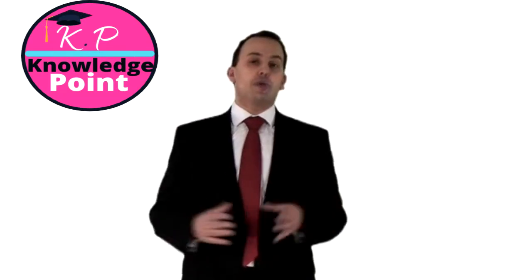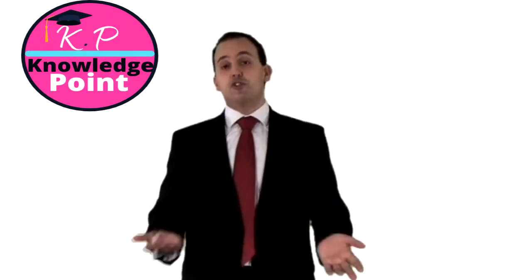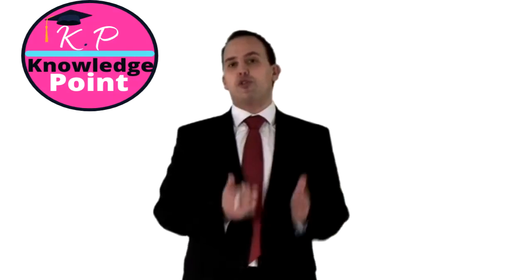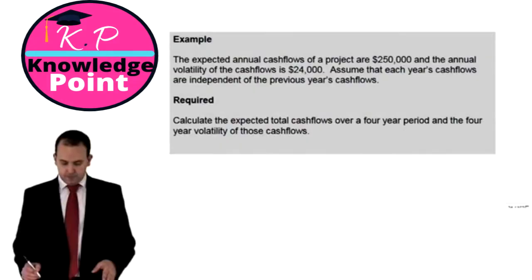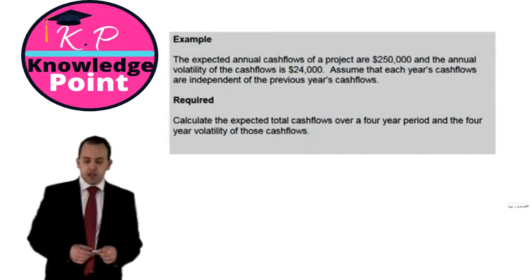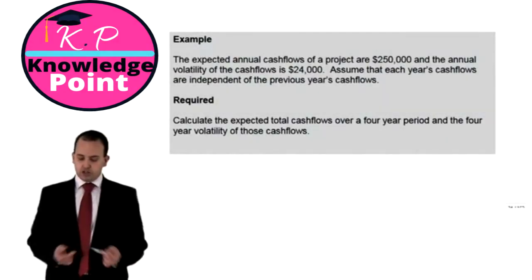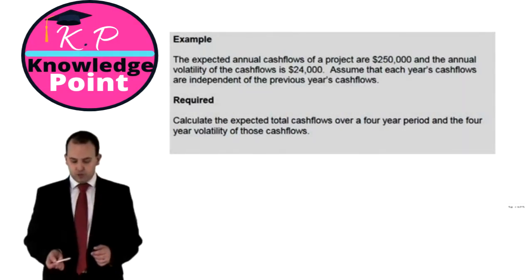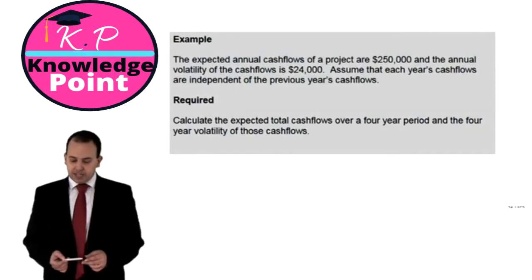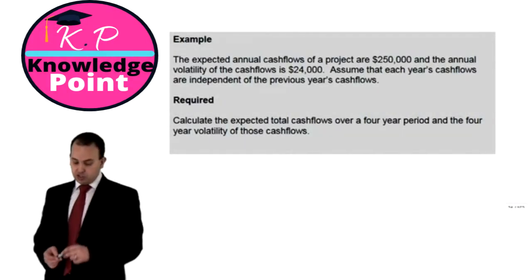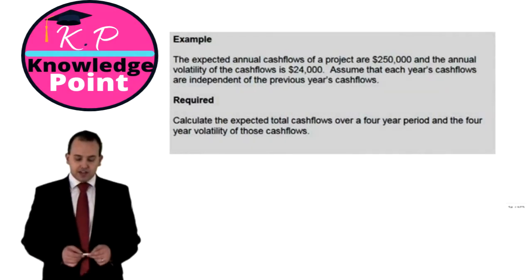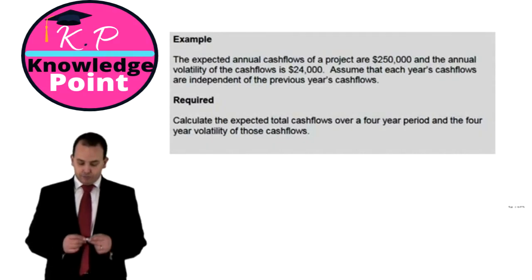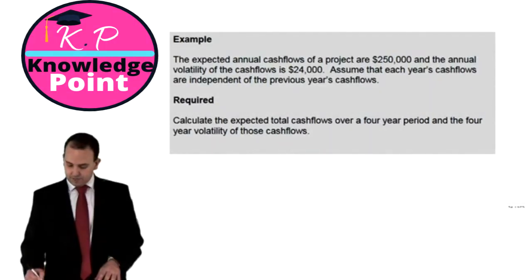For example, if the long period is one year and the short period is three months, then t would be four because there are four three-month periods in one year. Considering an example: the expected annual cash flows of a project are $250,000, and the annual volatility of the cash flows is $24,000. Assume that each year's cash flows are independent of the previous year's. Calculate the expected total cash flows over a four-year period and the four-year volatility.